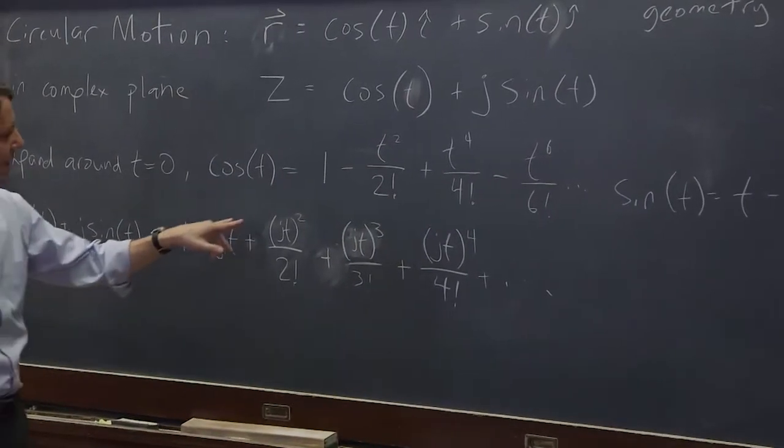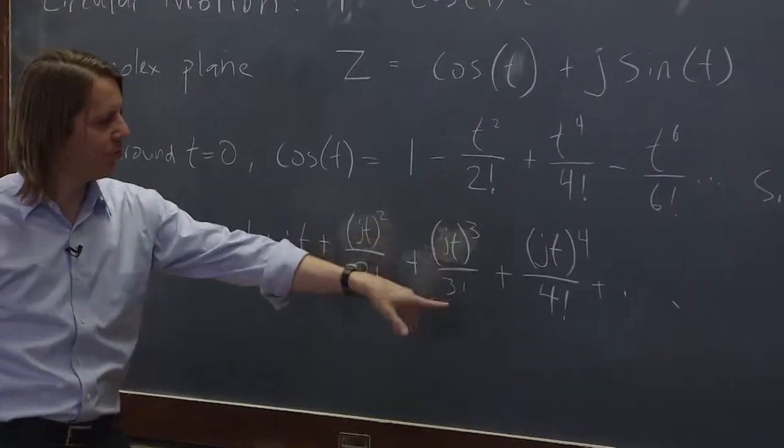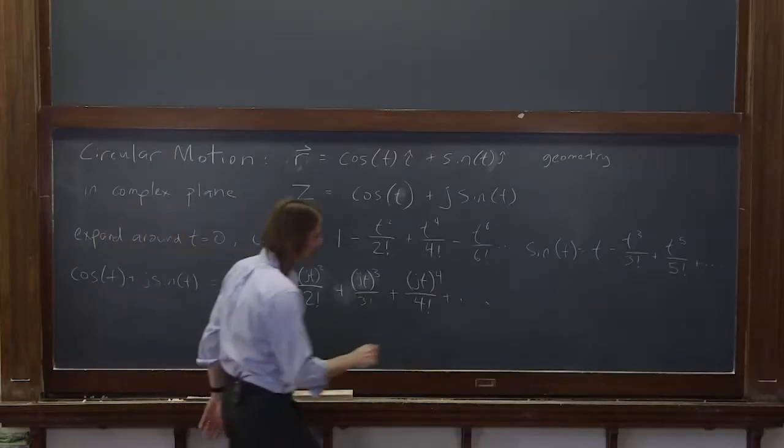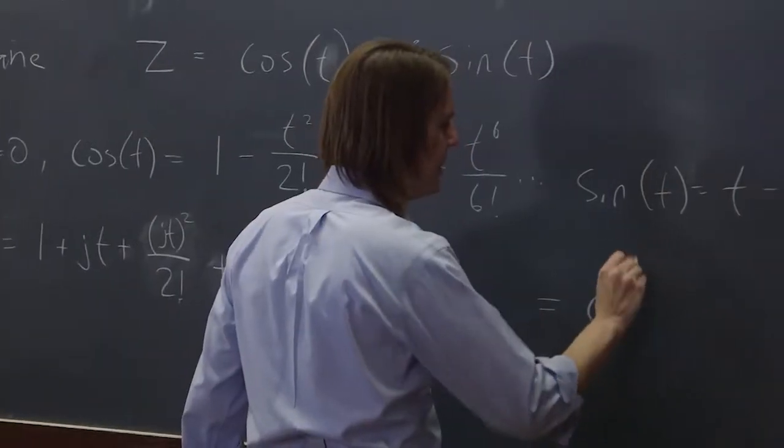It's jt over one factorial, jt squared over two, jt cubed over three, jt to the fourth over four. Well, that, if you know your expansions, is equal to e to the jt.